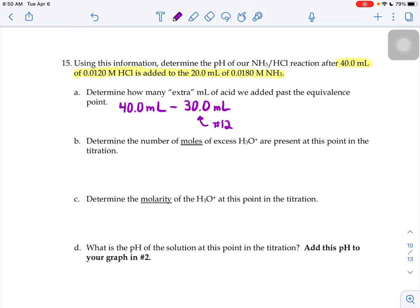So that means that we've accidentally overshot that equivalence point by 10 milliliters. 10 extra milliliters of H3O+.